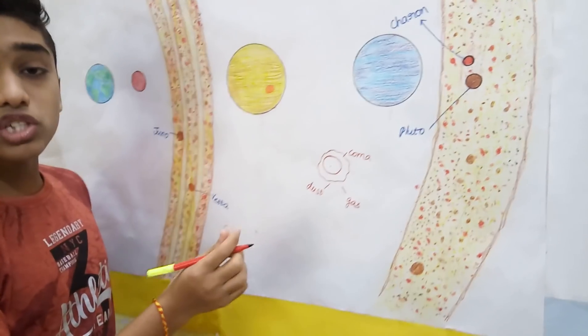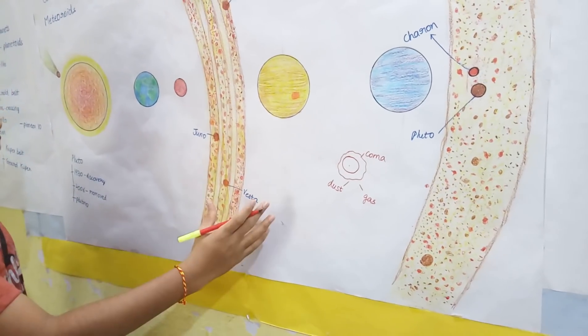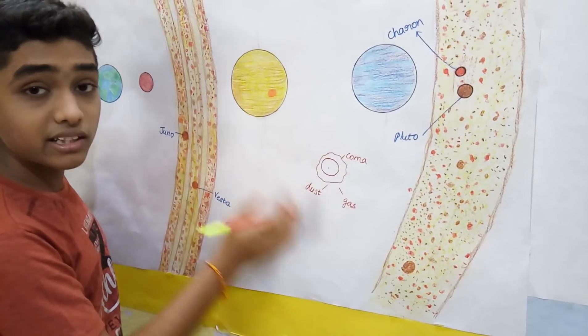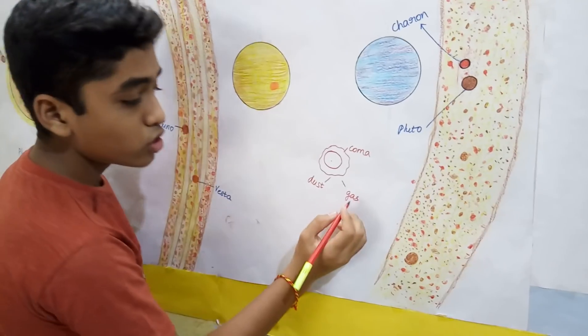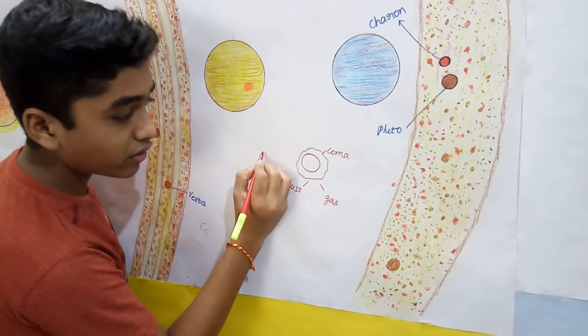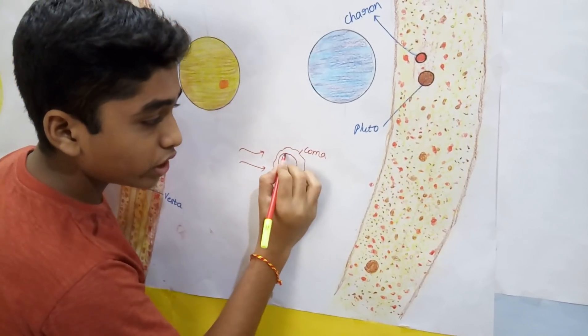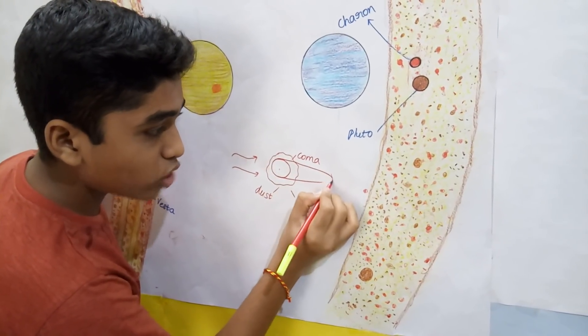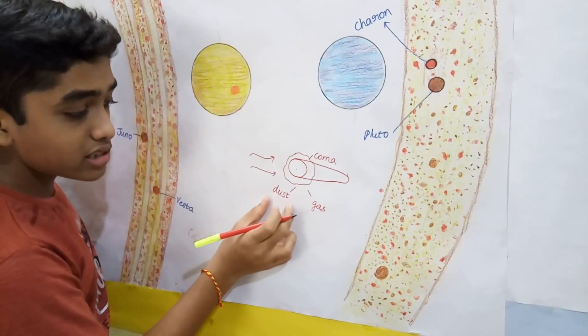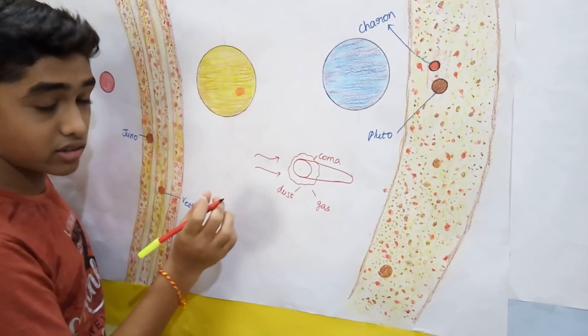This gas is influenced by the solar wind that is coming from the sun, and the dust is influenced by the sunlight of the sun. So the solar wind blows this gas coma away, and it forms as a tail for this comet, like this.